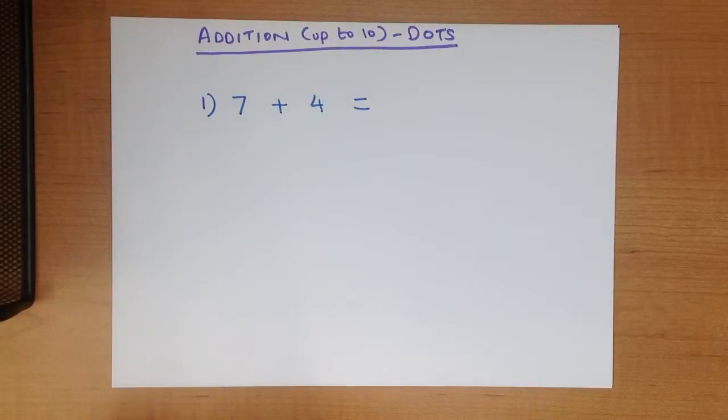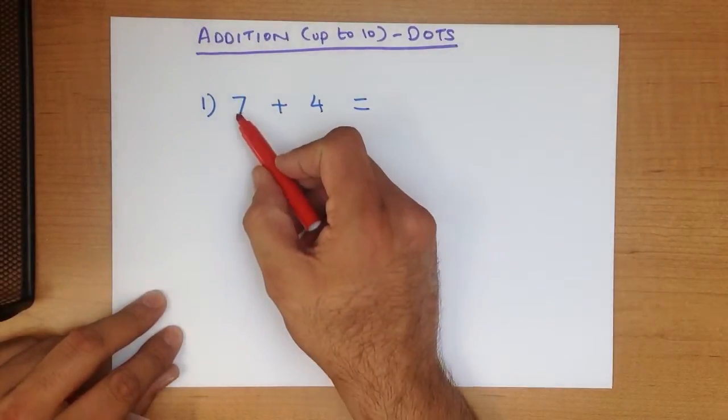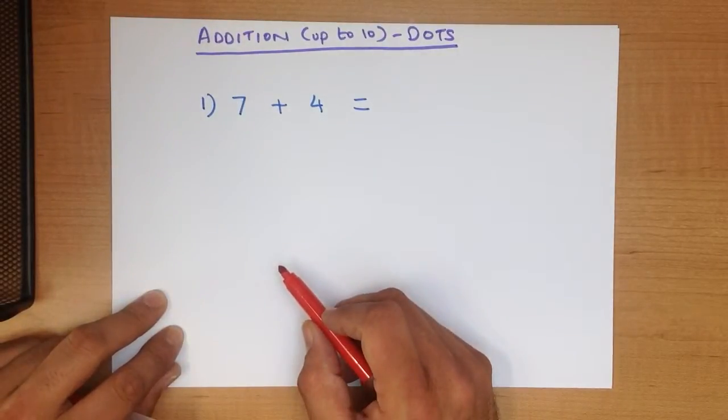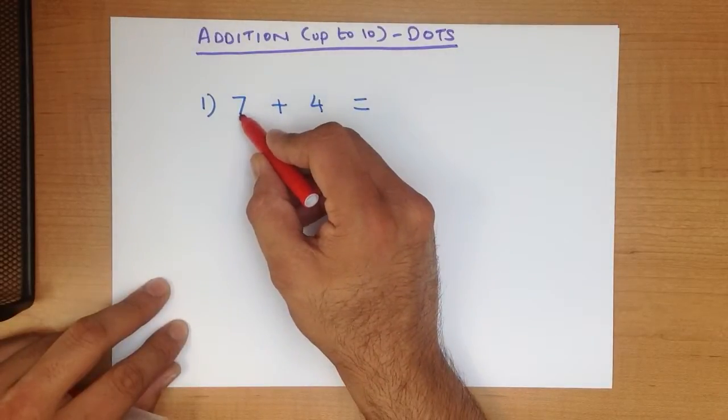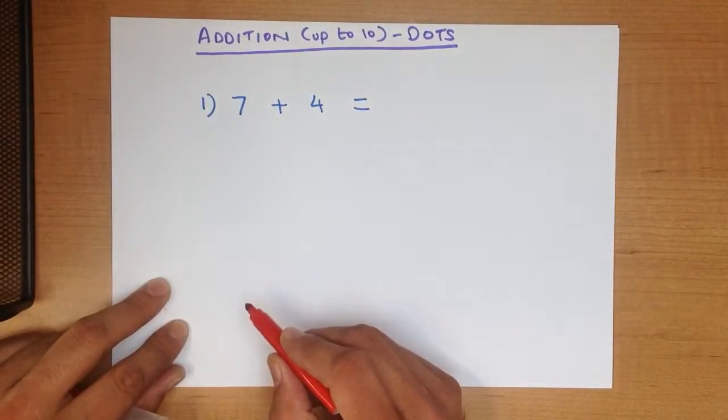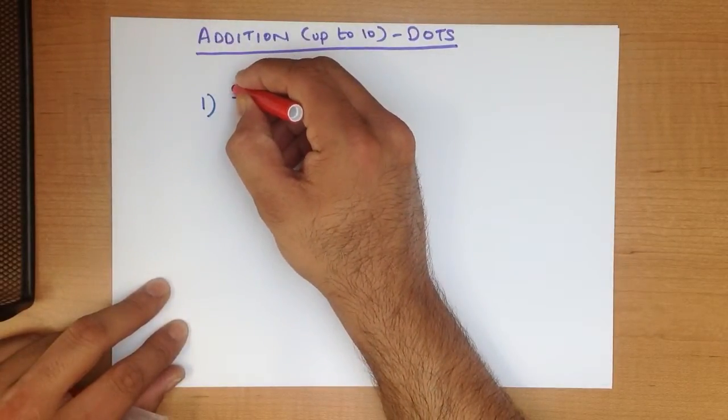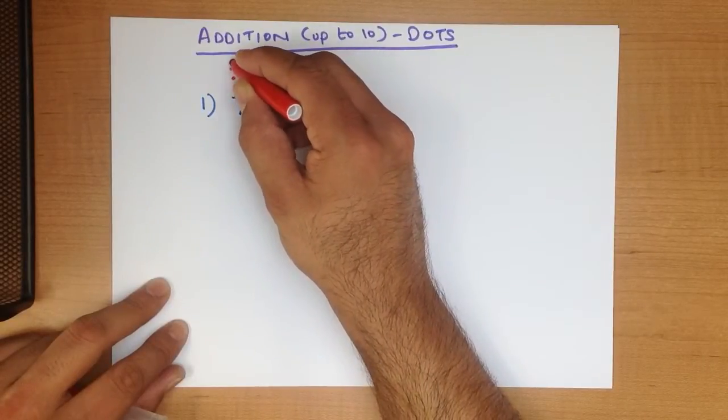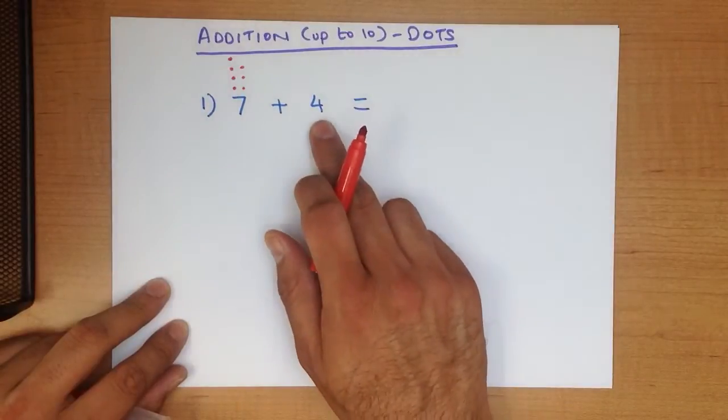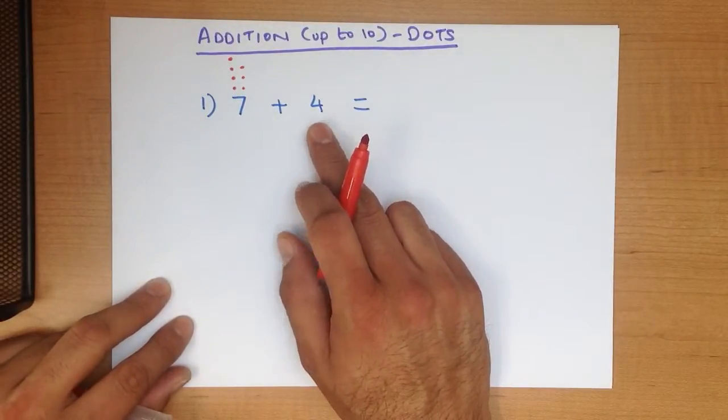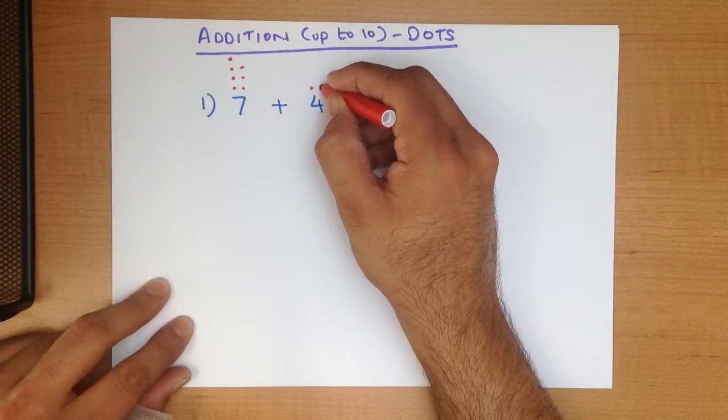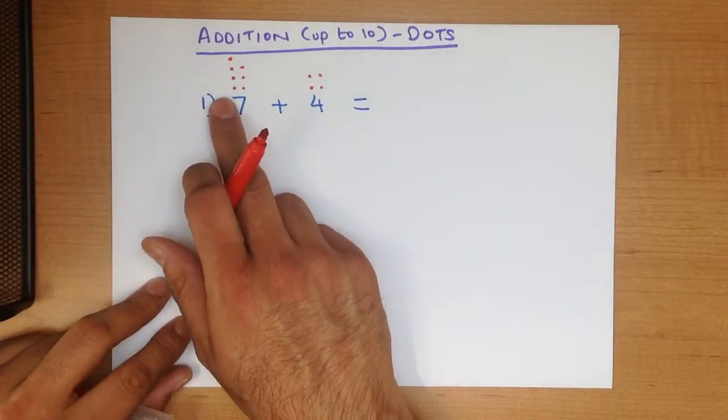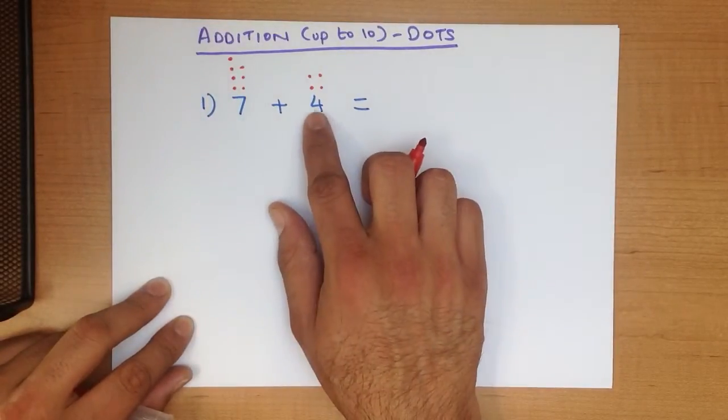The dots method works like this. Above each of the numbers we write down how many dots there are. For example, in this one, 7, we write down 7 dots: 1, 2, 3, 4, 5, 6, 7. Above this number, 4, we write down 4 dots: 1, 2, 3, 4. So 7 has 7 dots and 4 has 4 dots.